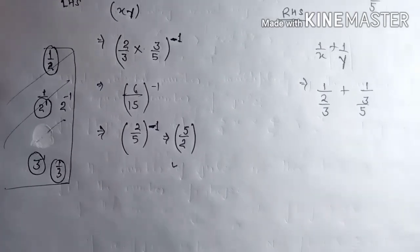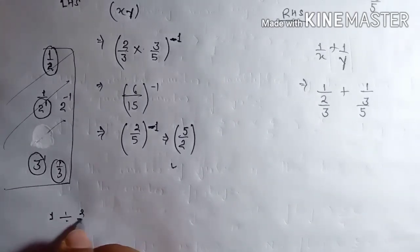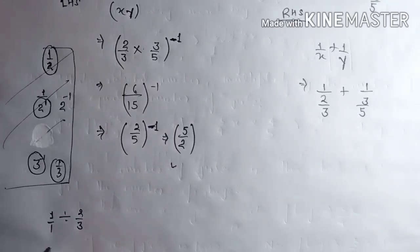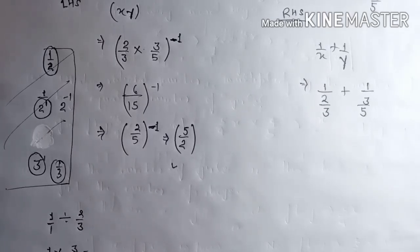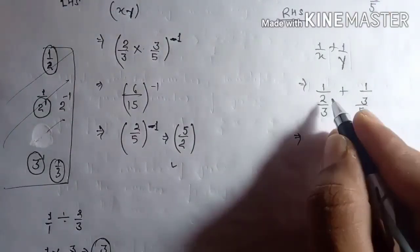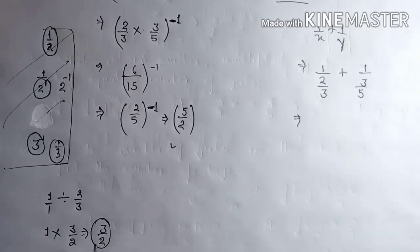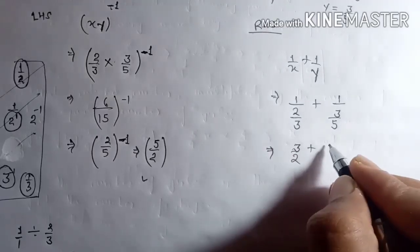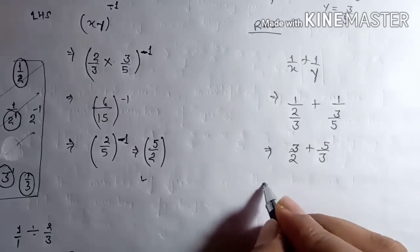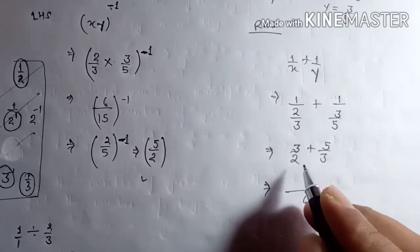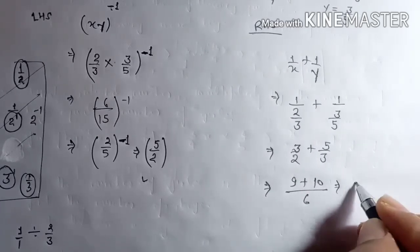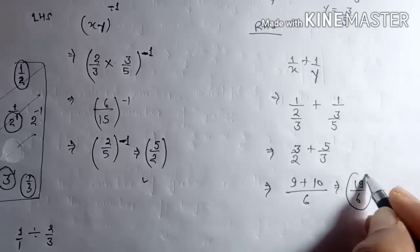To solve 1 upon 2 upon 3, we write 1 upon 1 divided by 2 upon 3, which becomes 1 into 3 upon 2, giving us 3 upon 2. Similarly, 1 upon 3 upon 5 becomes 5 upon 3. Now solving: 3 upon 2 plus 5 upon 3. The common denominator is 6, giving us 9 plus 10 equals 19 upon 6.